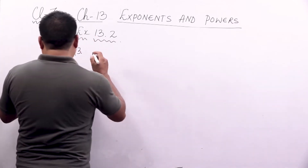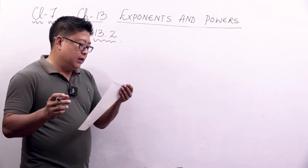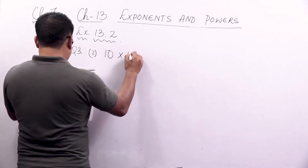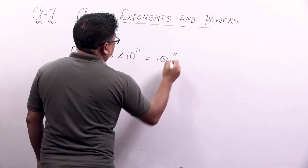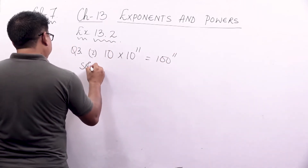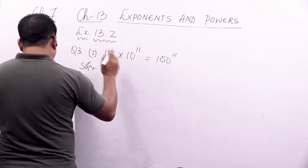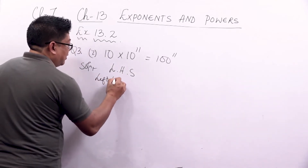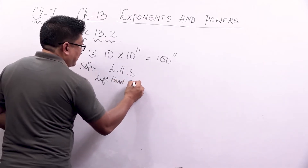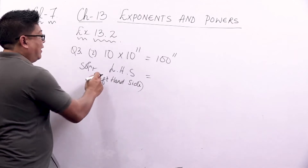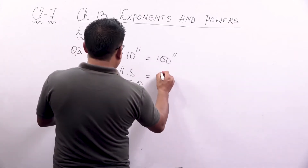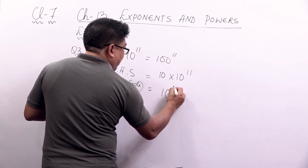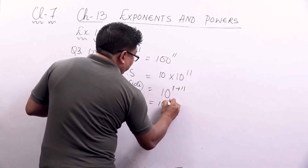The question says: say true or false and justify your answer. The statement given is 10 into 10 to the power 11 is equal to 100 to the power 11. We have to say whether this is true or false. We will first look at LHS — left hand side. LHS is 10 into 10 to the power 11. Same base, no power given means it is 1, so 1 plus 11 gives us 10 to the power 12.